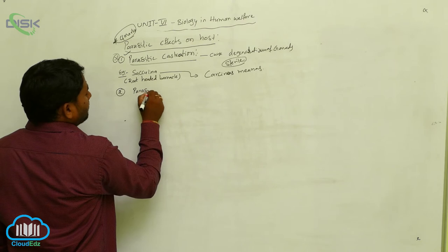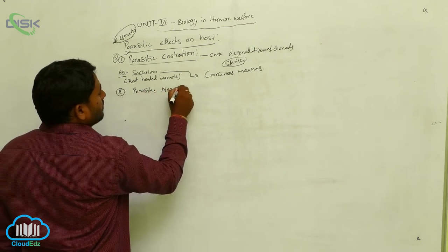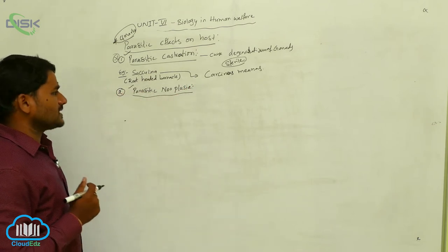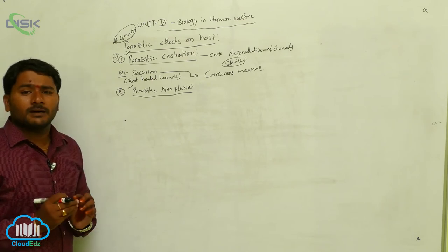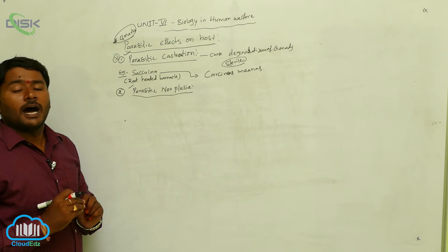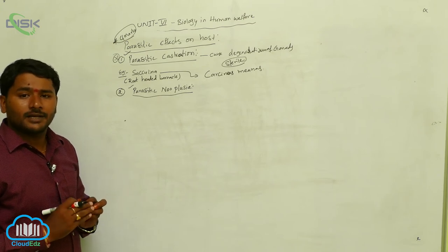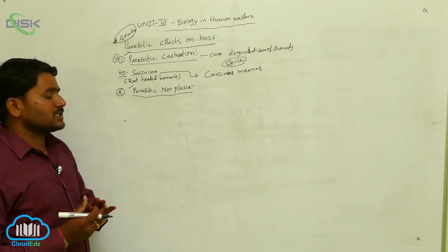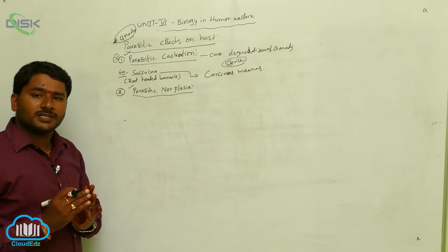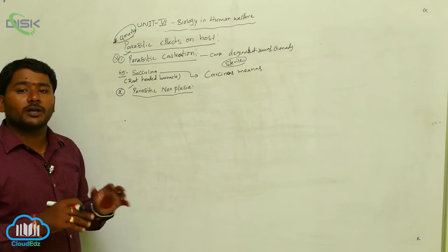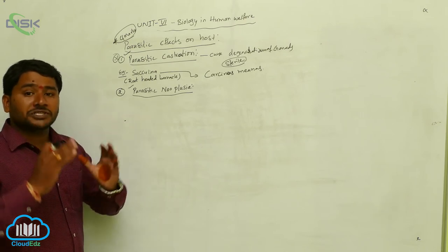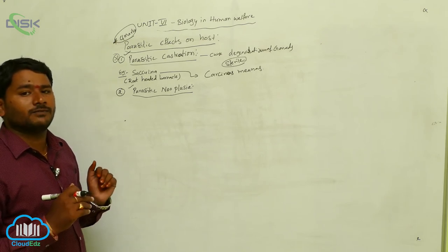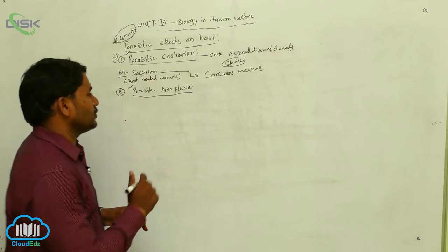Next is parasitic neoplasia. Some parasites cause abnormal division of cells and form a new structure in the host — this is called neoplasia. The cells are abnormally divided and new structures are formed in the host by the effect of the parasite.